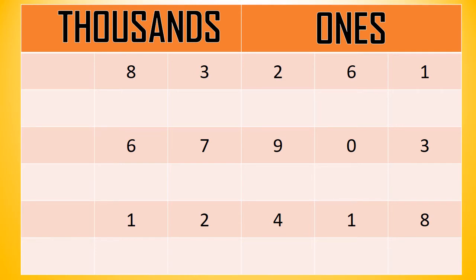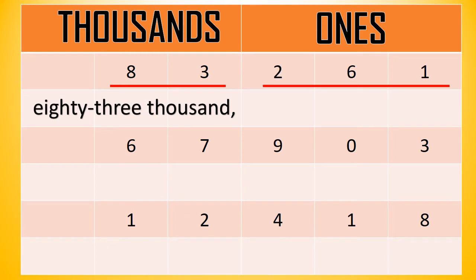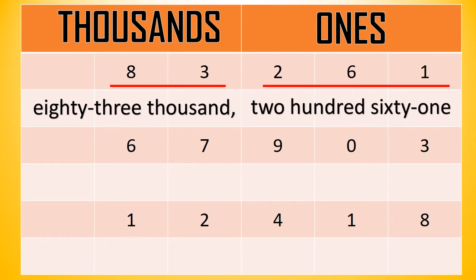Let's try other examples. How do we read this number? That's 83, and it belongs to the thousands period, so that's 83,000. That's 261. So again, the number is 83,261. How do we write this number in words? This is how we write 83,000, and this is 261. So again, the number is 83,261.